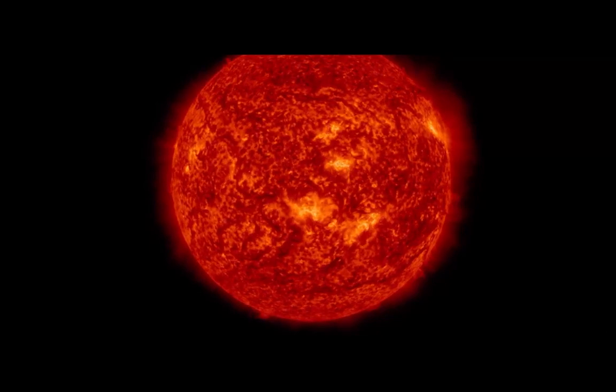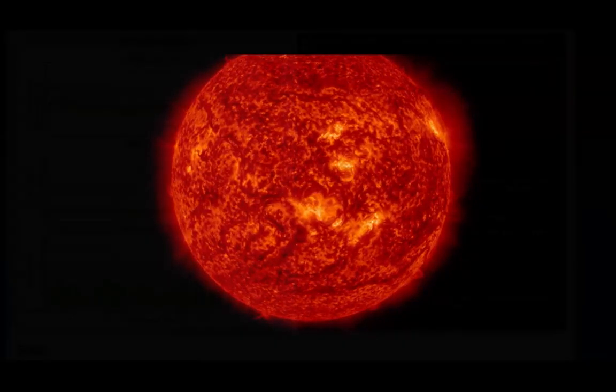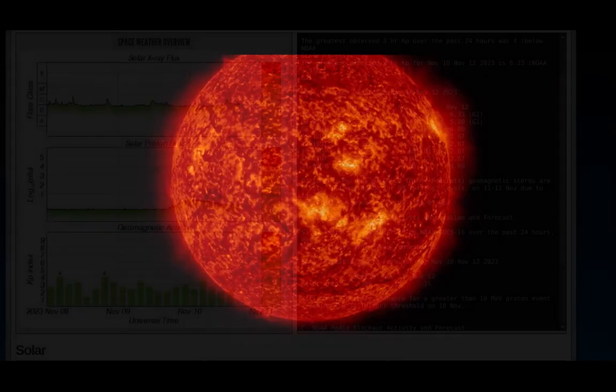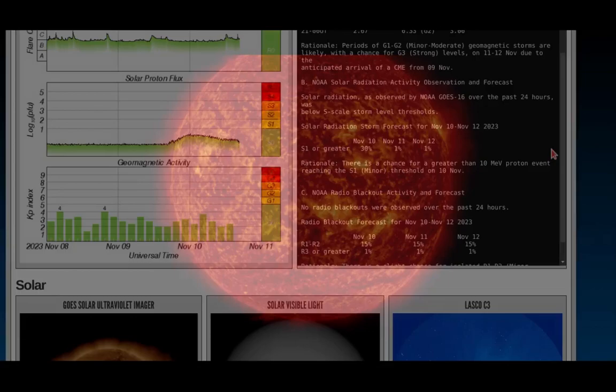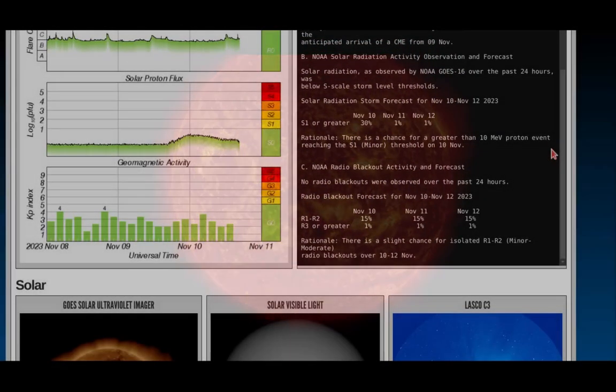Periods of G1 to G2, minor to moderate geomagnetic storm conditions are likely with a chance for a G3, a strong level, due to the anticipated arrival of a CME from the 9th of November.